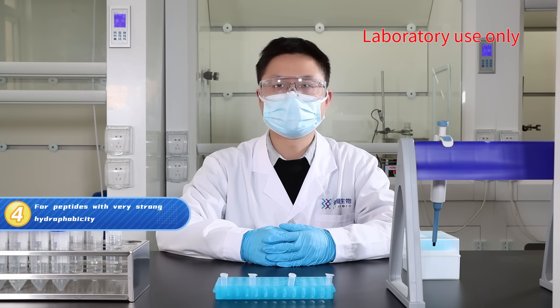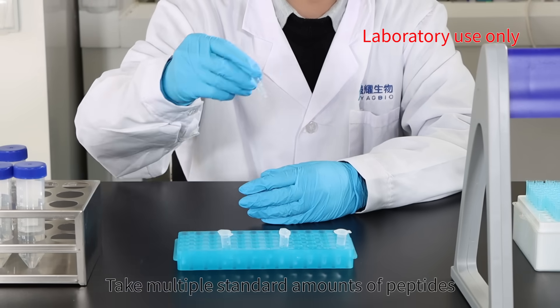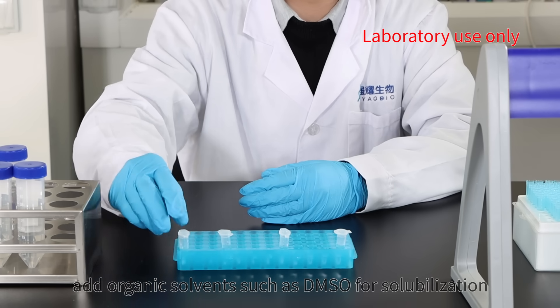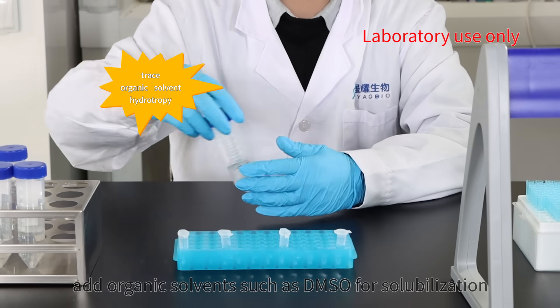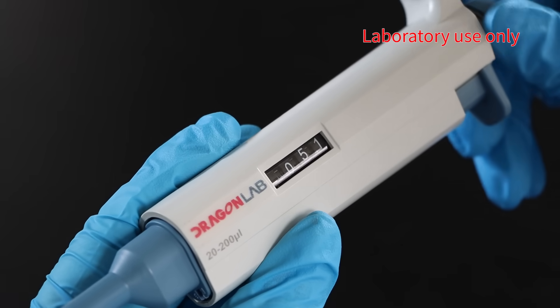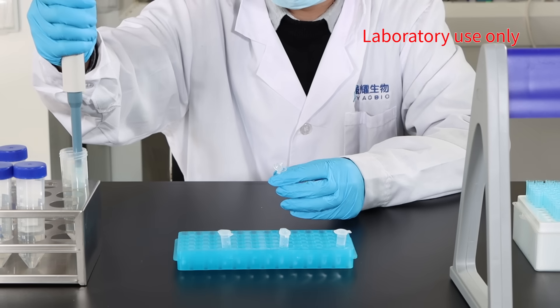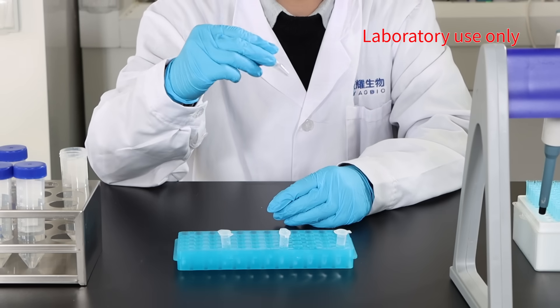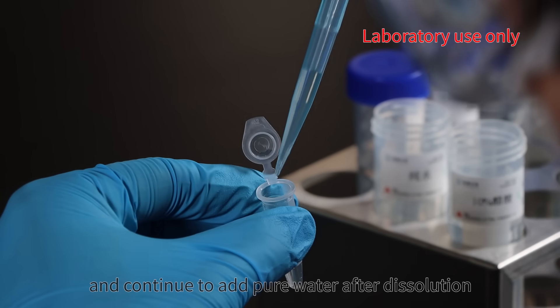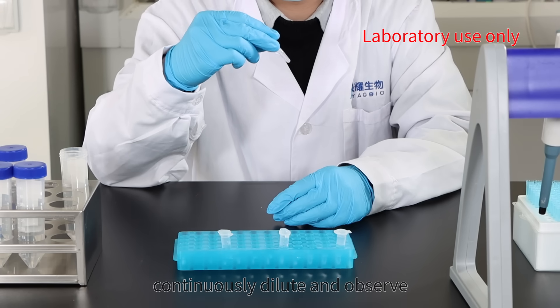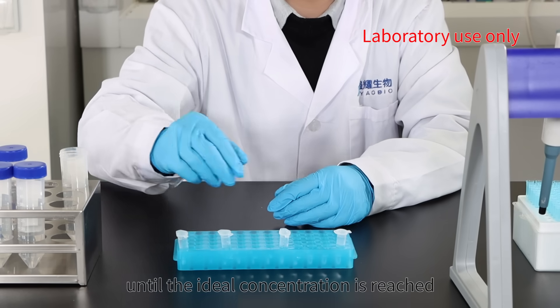Four, for peptides with very strong hydrophobicity: take multiple standard amounts of peptides, place them in a 1.5 milliliter centrifuge tube, and add organic solvents such as DMSO for solubilization. Continue to add pure water after dissolution to continuously dilute and observe until the ideal concentration is reached.